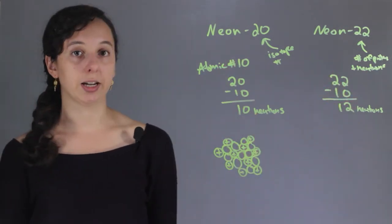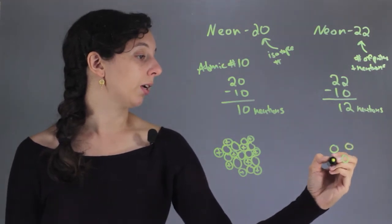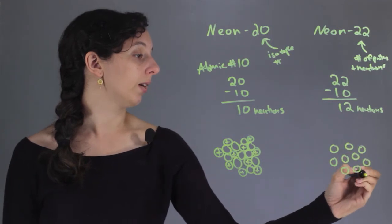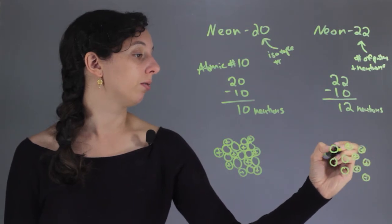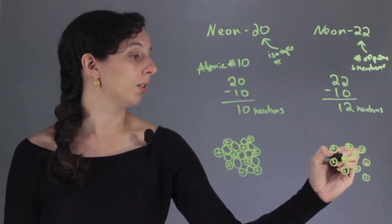And over here it's going to be the same thing with the protons. 1, 2, 3, 4, 5, 6, 7, 8, 9, 10. Each has a positive charge. And remember, we're not talking about overall charge here. We don't really know how many electrons either of these has.